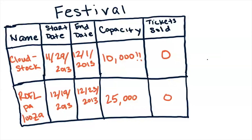So how do we do that? How do we think about that? Let's take a look at it on the tablet to make it a little more clear. Start off by looking at our festival object. We have the festival here, all of the different field names, and then we have individual records like Cloud Stock and Raffle Palooza.